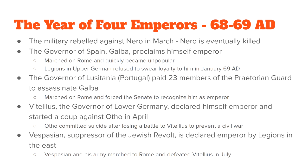The year 69 was very bad for the Roman Empire — it's known as the Year of Four Emperors. It started in March of 69 AD when the military rebelled against Nero and killed him. Once Nero was out of the way, the governor of Spain named Galba declared himself emperor, marched an army to Rome, and made the Roman Senate crown him. However, a number of parts of the government and military refused to give him their loyalty.